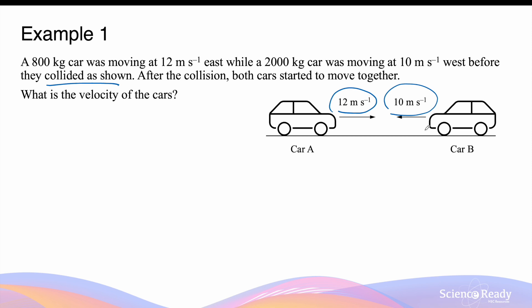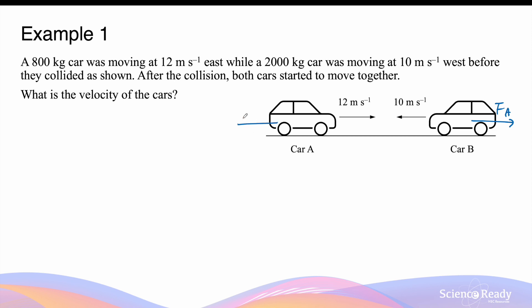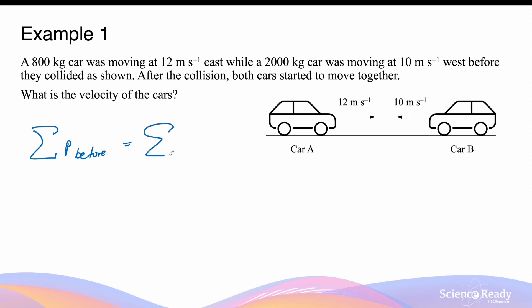While we do have the weight force acting on the cars, these weight force vectors do not affect the motion — that is, the velocity of the cars — as the vectors are perpendicular to the velocity vectors. In simpler words, there are no forces acting on the cars in the horizontal direction. When the cars do collide, car A will exert a force on car B, and car B will exert a force on car A going towards the left or west. These two force vectors are internal forces, as they are provided by objects already in the system. Because there are no external forces acting on the two cars, we can apply the law of conservation of momentum, which means the total momentum before the collision should equal the total momentum after the collision.